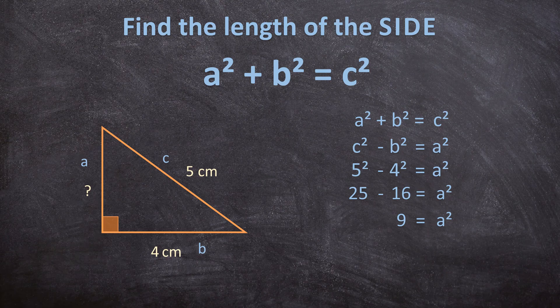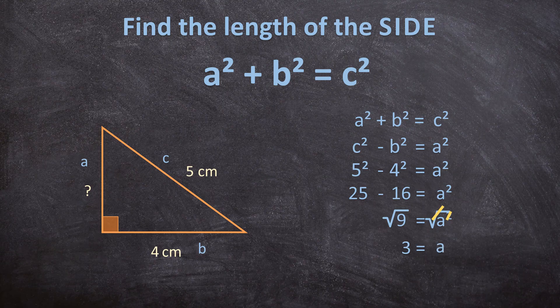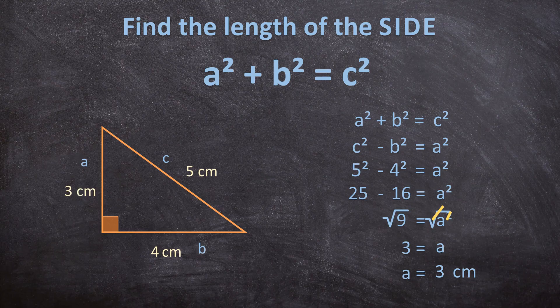We don't want A² — we want the side length A. So we take the square root of A², which cancels the square. We also need the square root of 9. The square root of 9 is 3, so A equals 3. But 3 can mean anything — 3 days, 3 apples — so we write A equals 3 centimetres. The length of A is 3 centimetres.